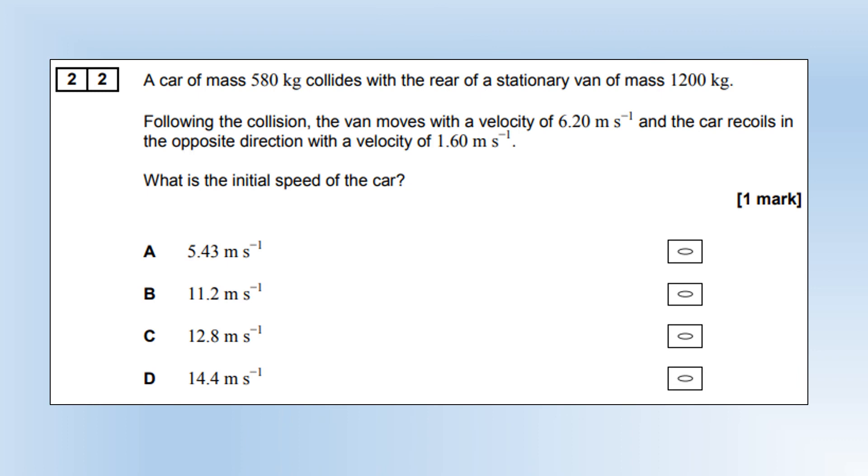A car of mass 580 kilograms collides with the rear of a stationary van of mass 1200 kilograms. Following the collision, the van moves off with a velocity of 6.20 meters per second and the car recoils in the opposite direction with a velocity of 1.6. What is the initial speed of the car? This is a classic conservation of momentum type problem. You just need to make sure you get the sign right with the 1.6. Then we plug the numbers in and we get option B.